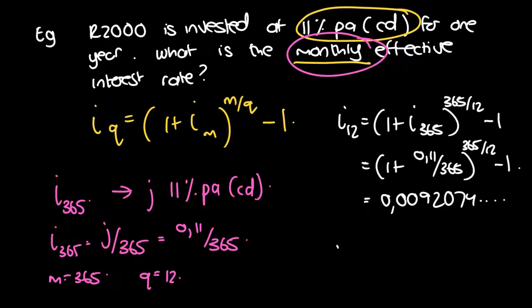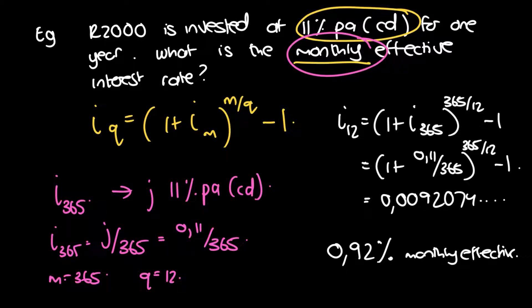Multiplying by 100 gives us 0.92% monthly effective. We round off to two decimal places in this module. Just a reminder: when the result comes out of the formula, it's in decimal fraction notation — 0.0092. But when discussing it, you convert to percentage by multiplying by 100, giving 0.92% monthly effective.